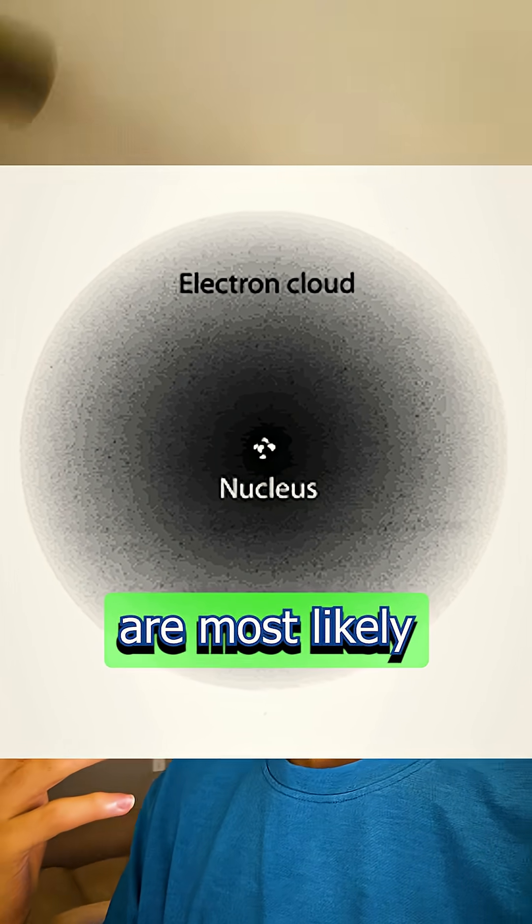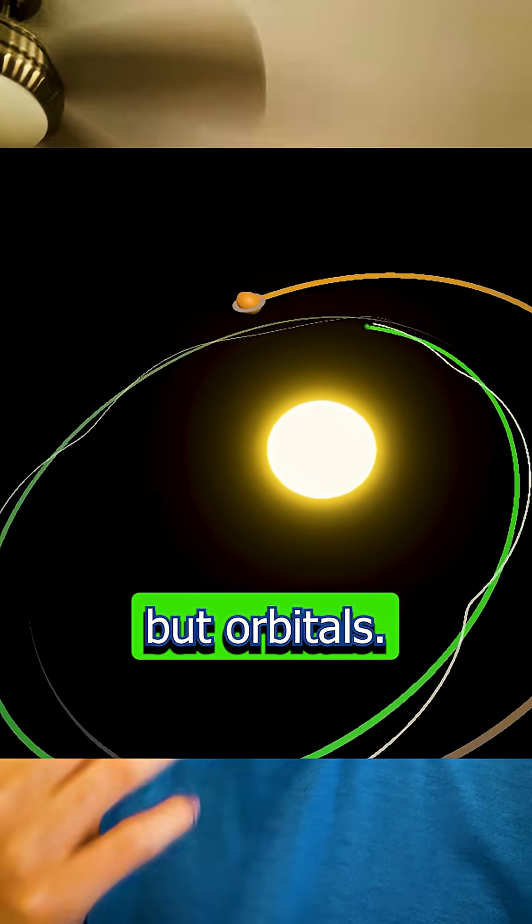These clouds, the regions in space where electrons are most likely to be found, are called orbitals. Not orbits, but orbitals.